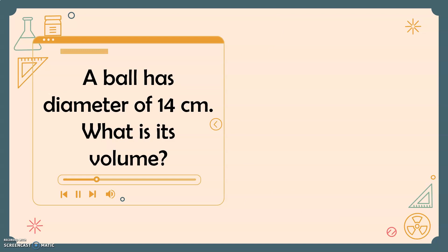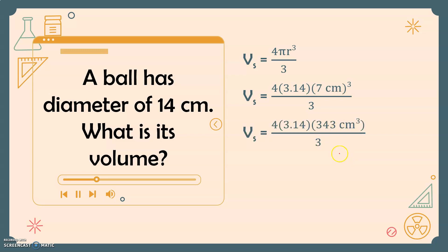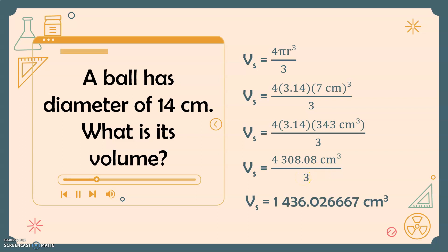Next, a ball has a diameter of 14 centimeters. What is its volume? To find the volume of a sphere, we use the same formula. We are given the diameter, so we compute the radius: 14 divided by two gives us seven. Substituting into our formula, we have four times 3.14 times seven centimeters cubed divided by three. Seven centimeters cubed is 343 cubic centimeters. Multiplying gives 4308.08 cubic centimeters, and dividing by three gives 1436.026667 cubic centimeters, which rounds to 1436.03 cubic centimeters.